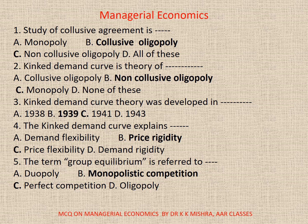2. Kinked Demand Curve is a theory of: A. Collusive Oligopoly, B. Non-Collusive Oligopoly, C. Monopoly, D. None. The correct option is B. Non-Collusive Oligopoly.